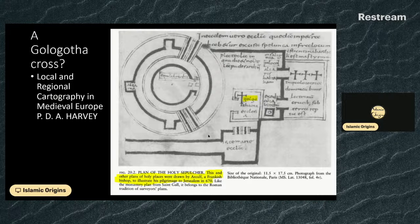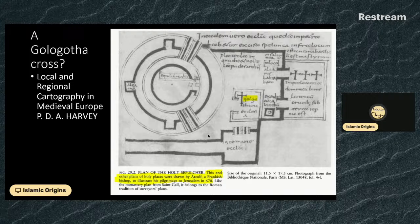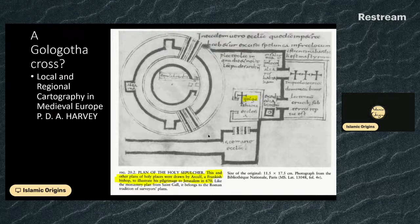So what we have here is a potential solution to the image on the coin and whether there was some sort of silver cross. This is the plan of the Holy Sepulcher drawn by Arculf, a Frankish bishop, to illustrate his pilgrimage to Jerusalem in around 670 or 680. According to a paper by P.D.A. Harvey, 'Local and Regional Cartography in Medieval Europe,' it belongs to the Roman tradition of surveyors' plans.